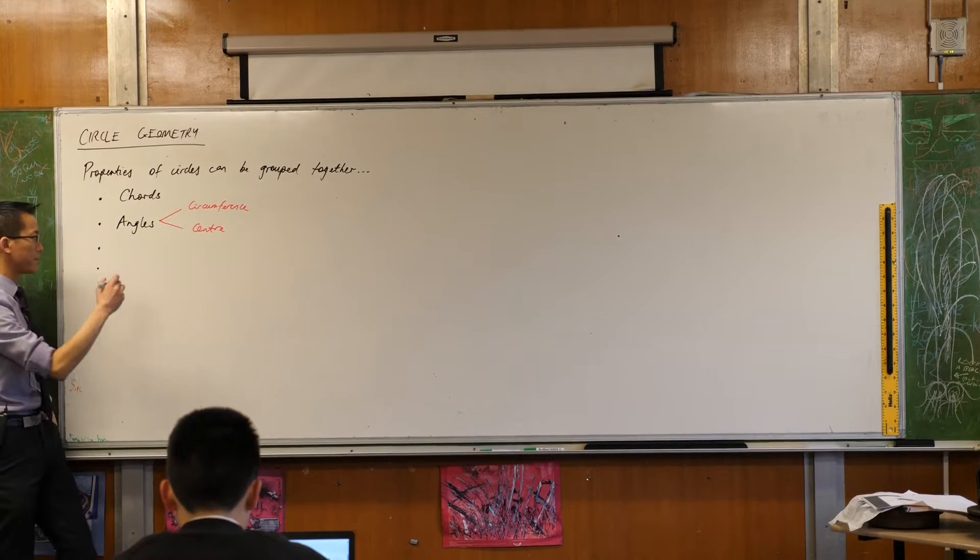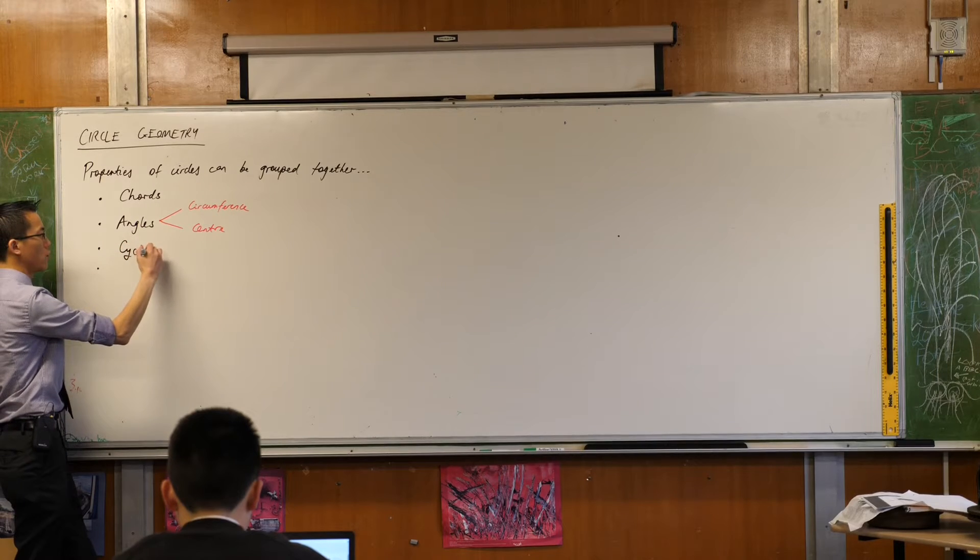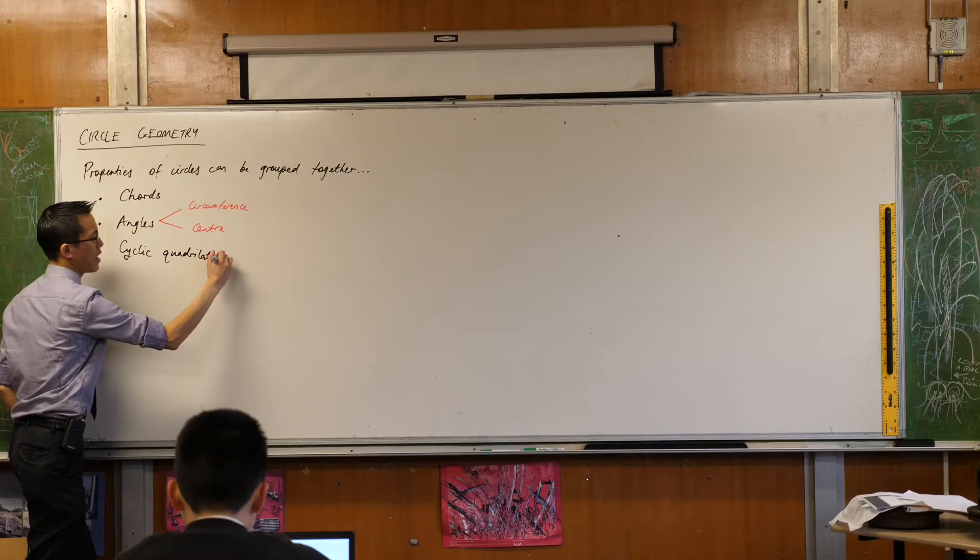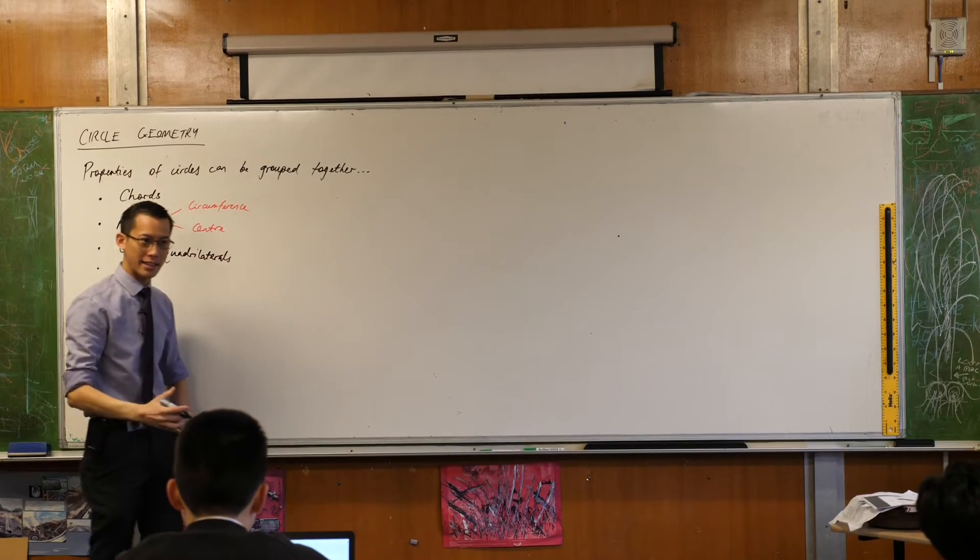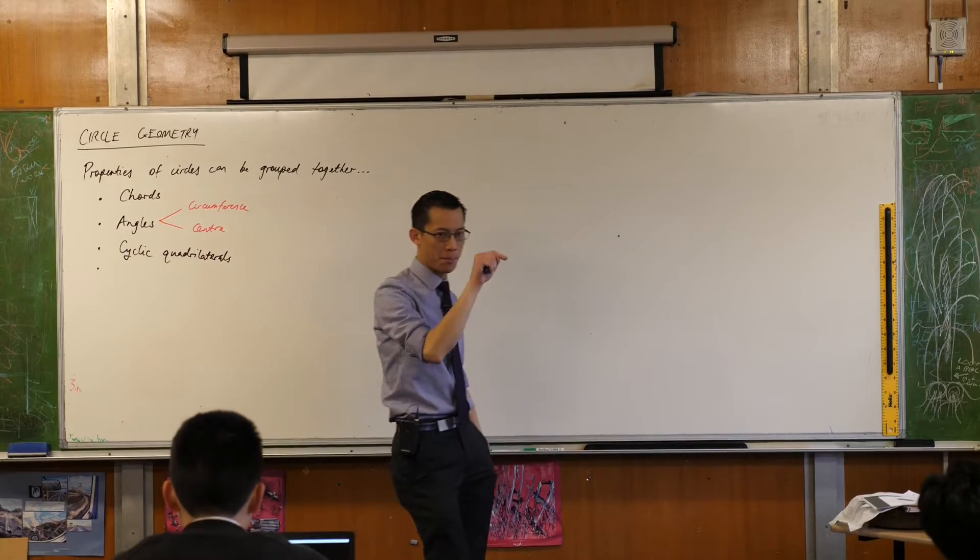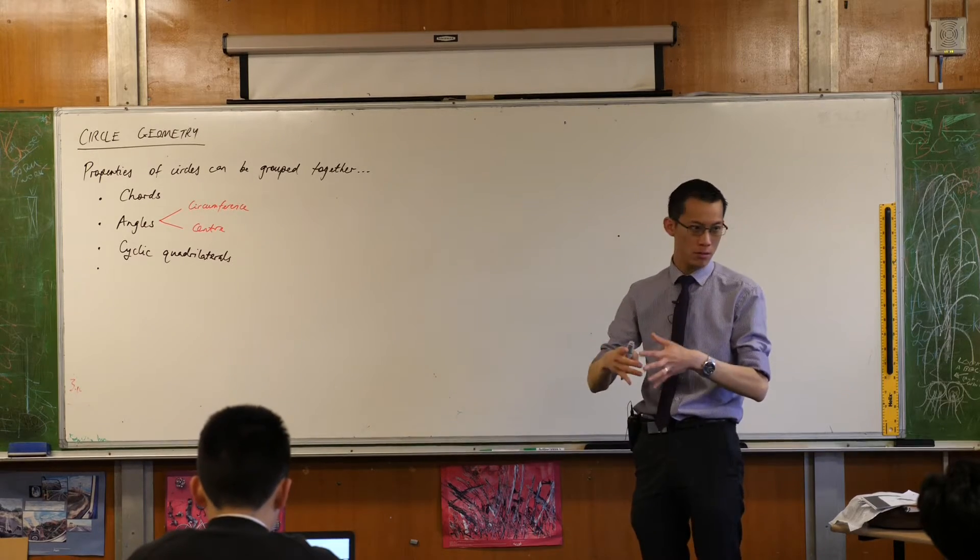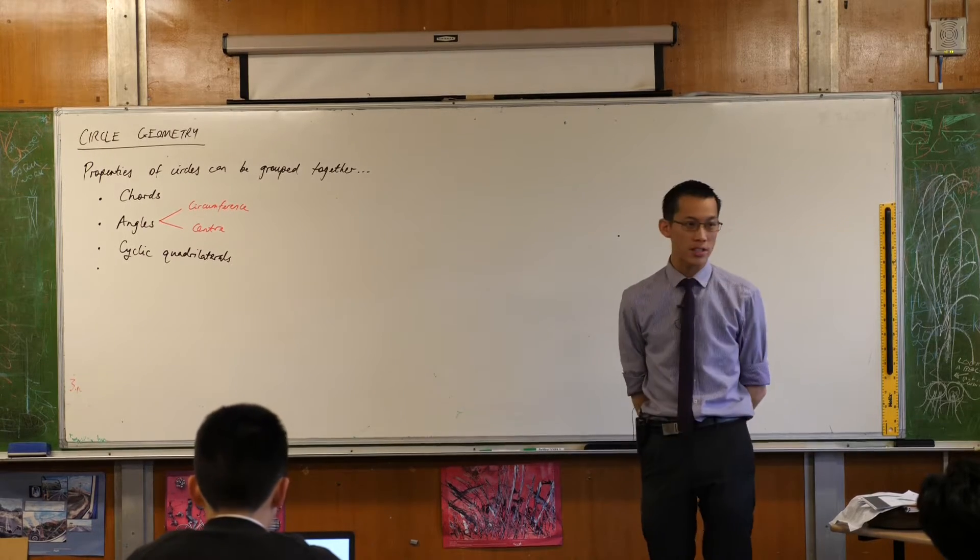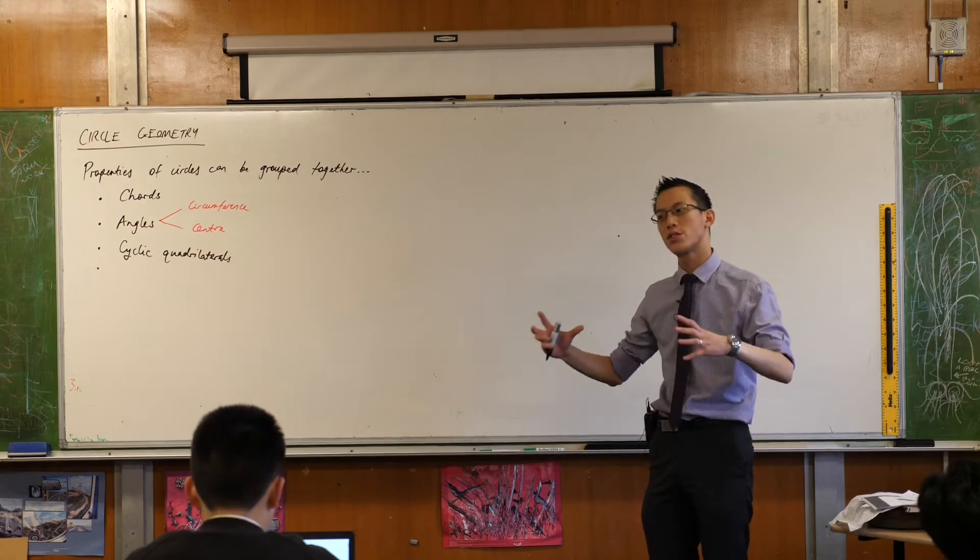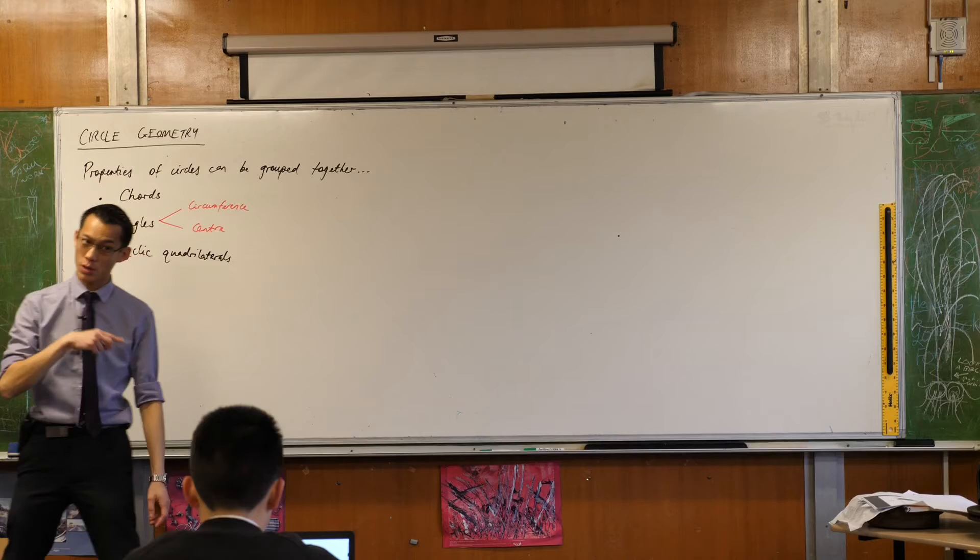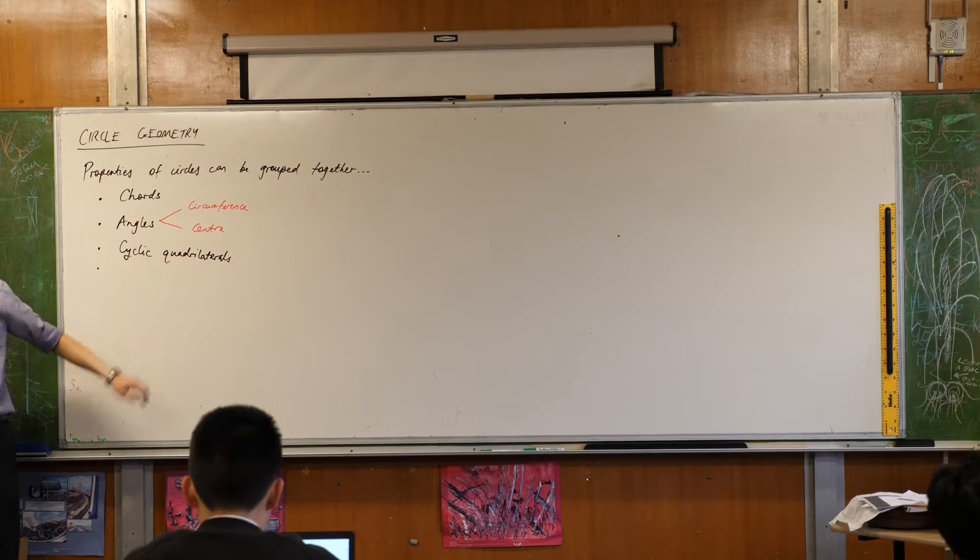After that we talk about these shapes called cyclic quadrilaterals. Whenever we describe a shape as cyclic, what we mean is that all of the points of that shape, might be a triangle, quadrilateral, pentagon, whatever you like, all of the corners, the vertices, are on the circumference of a circle. That's what makes it cyclic. Cyclic quadrilaterals tend to be the most interesting ones.